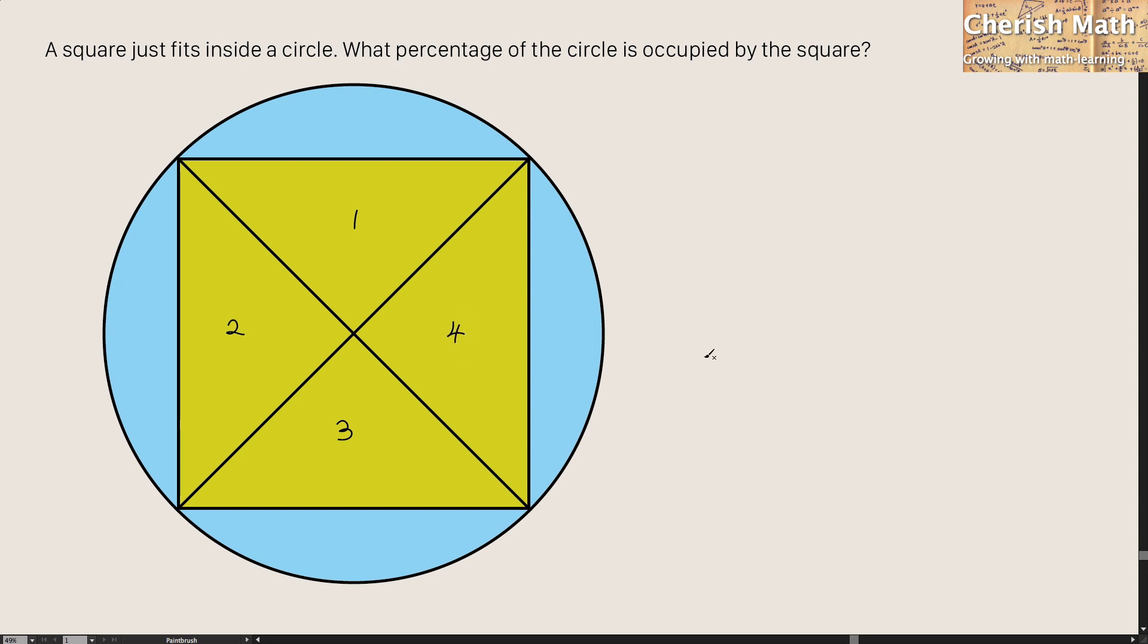It means that we have four identical triangles created in the square. This is an isosceles triangle that I'm going to label with a side R which is the radius of the circle and it is a right angle.